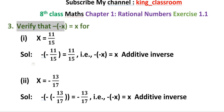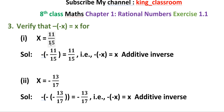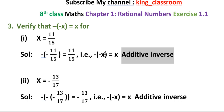Third problem: Verify that minus of minus x is equal to x. For the first one, x is equal to 11 by 15. Then minus of minus x — put the x value as 11 by 15. Minus of minus 11 by 15 equals: minus into minus is equal to plus, so 11 by 15. Therefore minus of minus x equals x. This is the additive inverse.